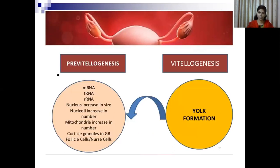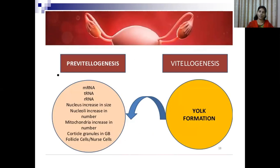In pre-vitellogenesis, the cytoplasmic and nuclear material starts to increase in size — this includes mRNA, tRNA, rRNA, the nucleus, and mitochondria all increasing in size. So all materials except yolk — all cytoplasmic and nuclear material — start to increase. Once this increase in nuclear and cytoplasmic material is complete, vitellogenesis begins, where the actual synthesis of yolk takes place.